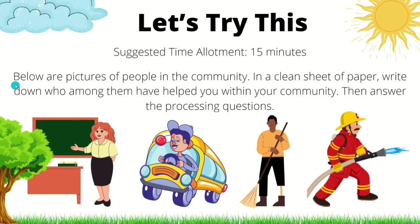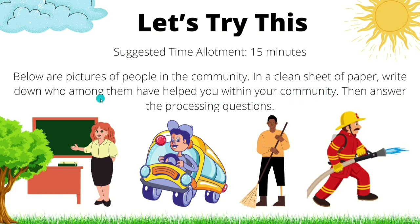Let's try this. Below are pictures of people in the community. In a clean sheet of paper, write down who among them have helped you within your community. Then, once you're done choosing, answer the processing question.